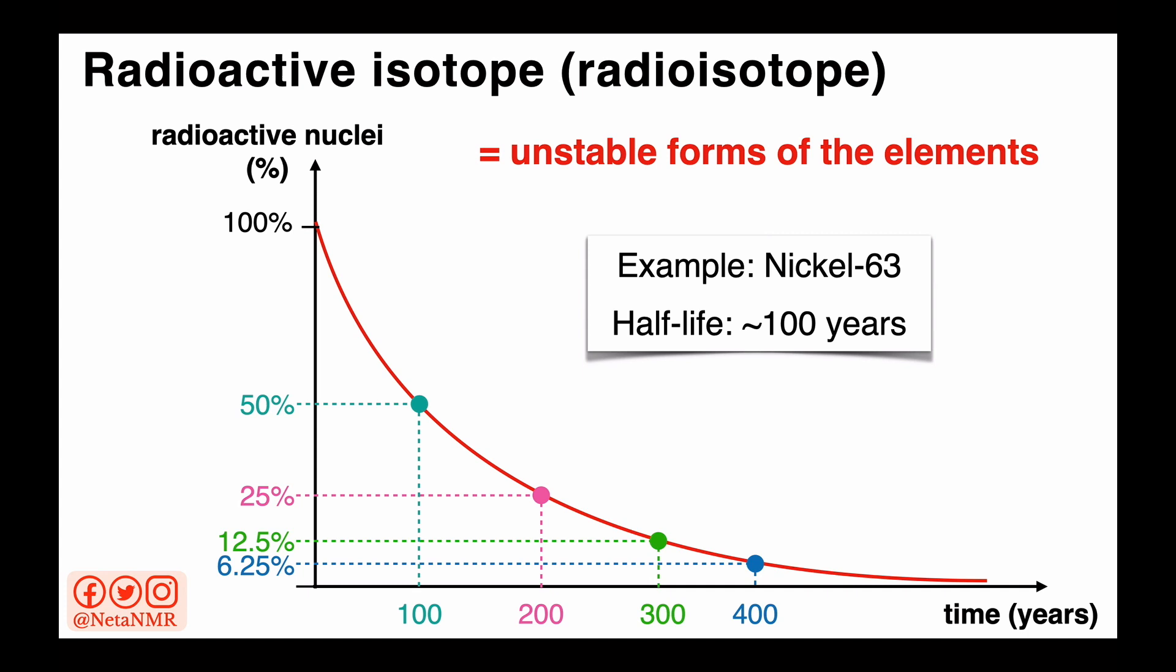So after 100 years, we're left with 50% of the radioactive nuclei. After another half-life, so after another 100 years, the new number of radioactive nuclei will be reduced again to half. That means that after 200 years, we'll only have 25% of the initial number of radioactive isotopes.